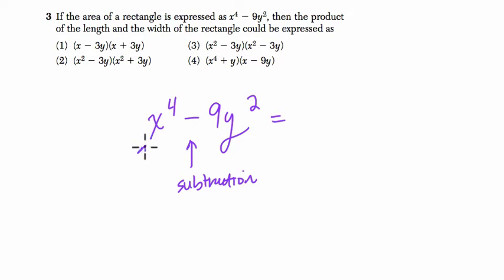They're two perfect squares because the square root of x to the 4th is x squared, and the square root of 9y squared is 3y.